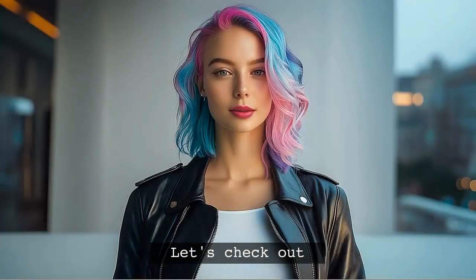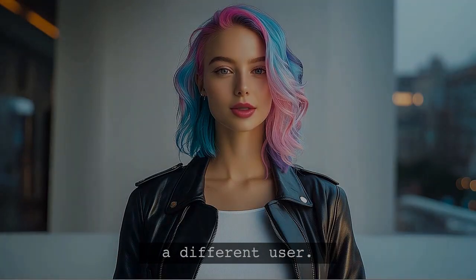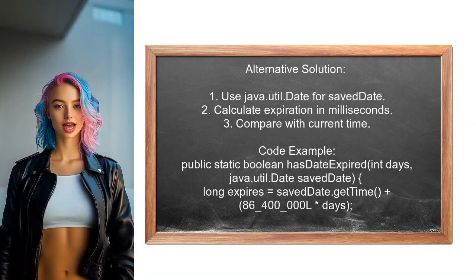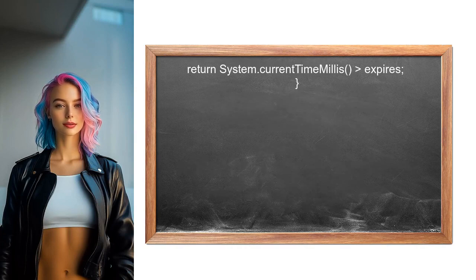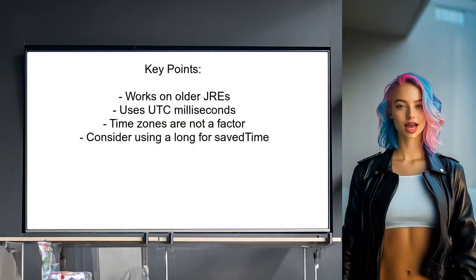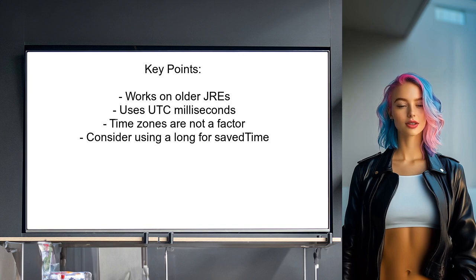Another perspective involves simplifying the expiration check using the java.util.Date class. They propose a method that calculates the expiration time in milliseconds and compares it to the current time. This method works well on older JRE versions as it uses UTC milliseconds, making time zones irrelevant. The user also mentions that you could further simplify this by using a long variable for saved time instead of java.util.Date.